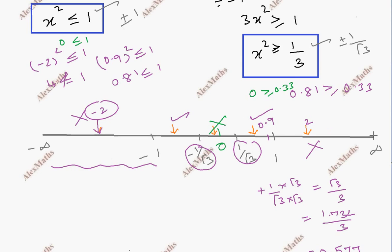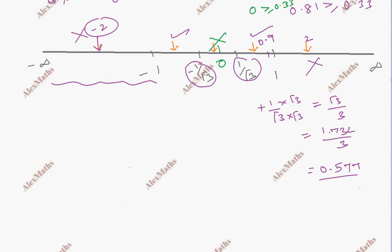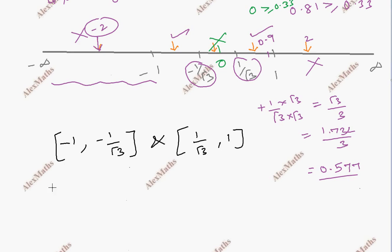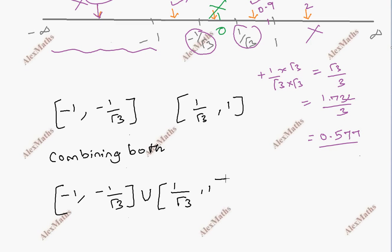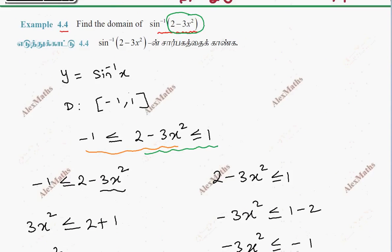So both endpoints are included. Combining both parts using intersection, the domain is the union of [-1, -1/√3] and [1/√3, 1]. This is the domain of the given expression.